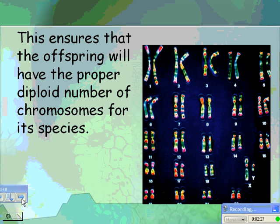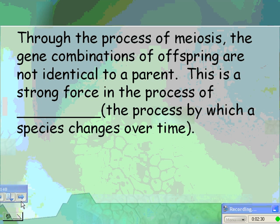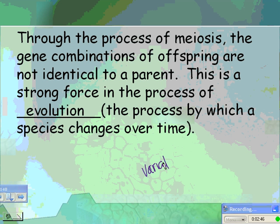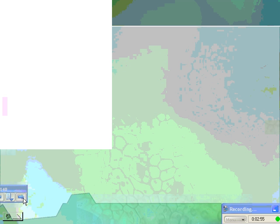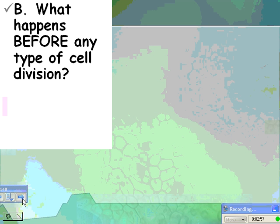This ensures that the offspring will have the proper diploid number of chromosomes for its species. Through the process of meiosis, the gene combinations of offspring are not identical to a parent. This is a strong force in the process of evolution — the process by which species change over time. It's really important to have variation in sexually reproducing organisms so that the ones best fit for that particular environment will survive, giving the greatest chance of somebody surviving a change in the environment.